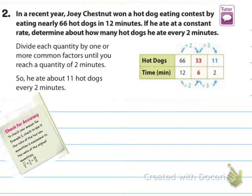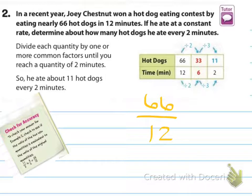Our first example: in a recent year, Joey Chestnut won a hot dog eating contest by eating nearly 66 hot dogs in 12 minutes. If he ate at a constant rate, determine about how many hot dogs he ate every two minutes. The way that we would do this using a table is we've got hot dogs — 66 hot dogs in 12 minutes — and we want to know how many hot dogs that would be in two minutes. One method using this table is that you can find a middleman, and we're going to talk more about the middleman later.